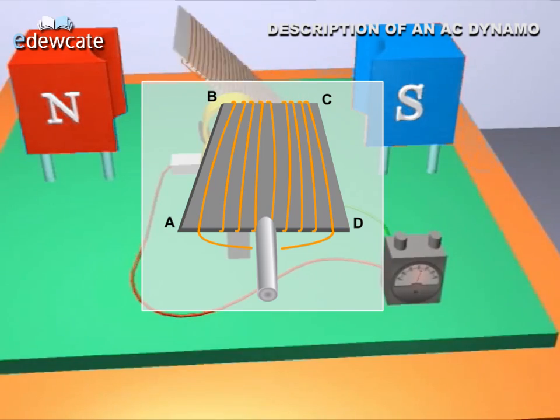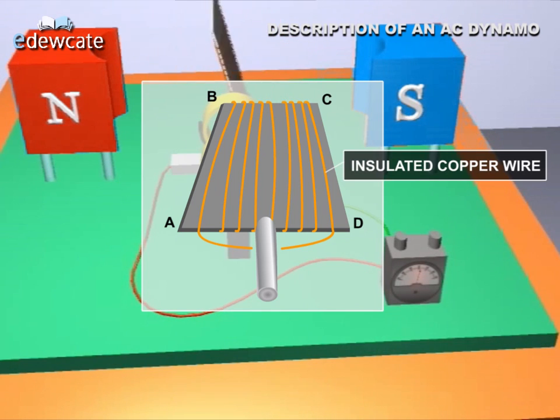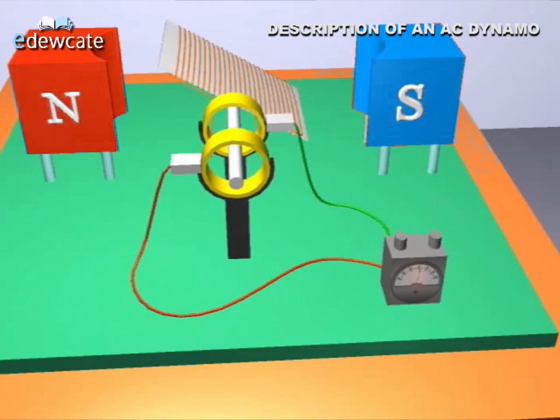The armature, depicted here as ABCD, consists of a coil made of insulated copper wire and is wound on a cylindrical soft iron core.